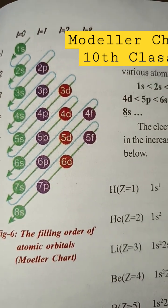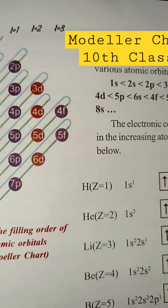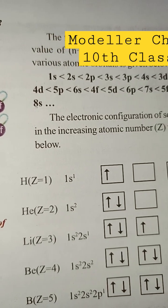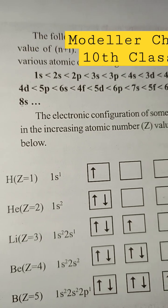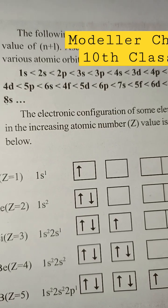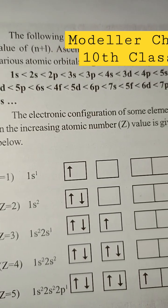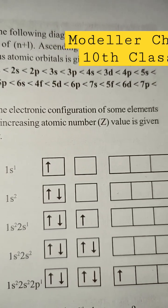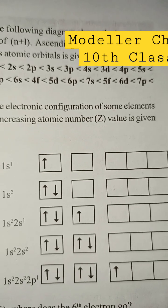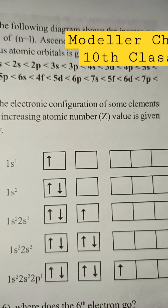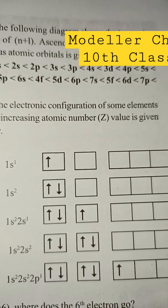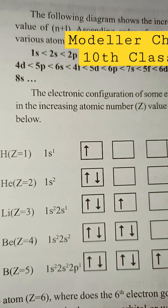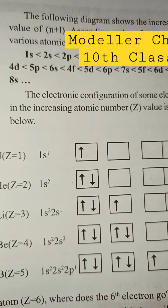That is: 1s < 2s < 2p < 3s < 3p < 4s < 3d < 4p < 5s < 4d < 5p.